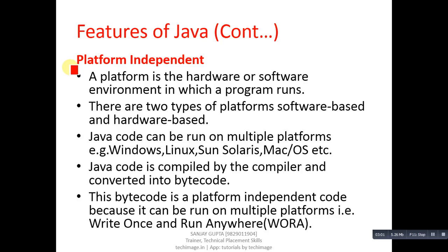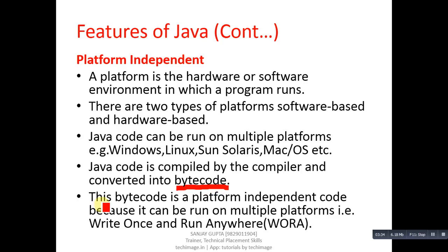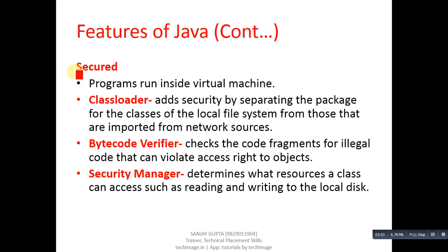Next is platform independent. A platform is a hardware or software environment in which a program runs. There are two types: software-based and hardware-based. Java code can be run on multiple platforms — for example Windows, Linux, Sun, Mac, etc. Java code is compiled by the compiler and converted into bytecode, which is platform-independent code. Because it can run anywhere, this is known as 'write once and run anywhere,' which is why Java is more popular than other languages.